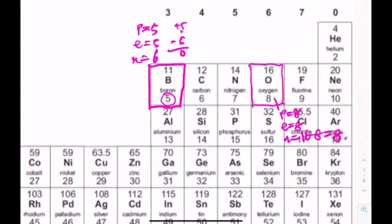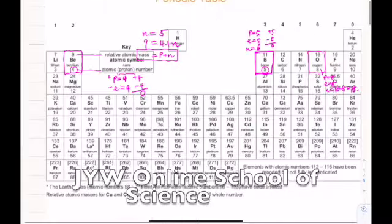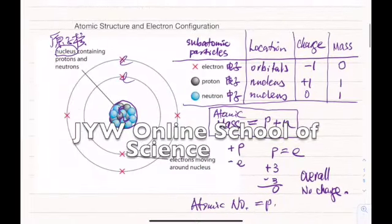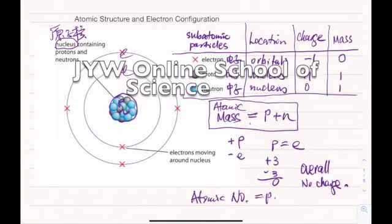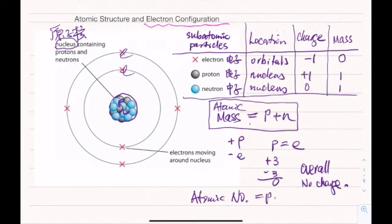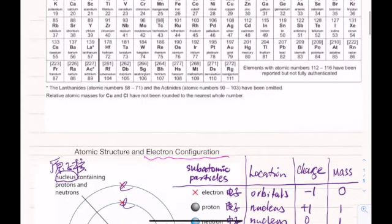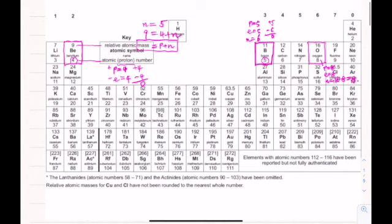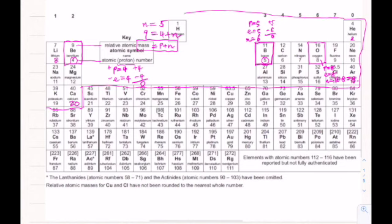Now we look at how electrons are arranged outside the nucleus — this is called electron configuration. At GCSE level you only need to know the first 20 elements, starting from hydrogen (number 1) up to calcium (number 20).